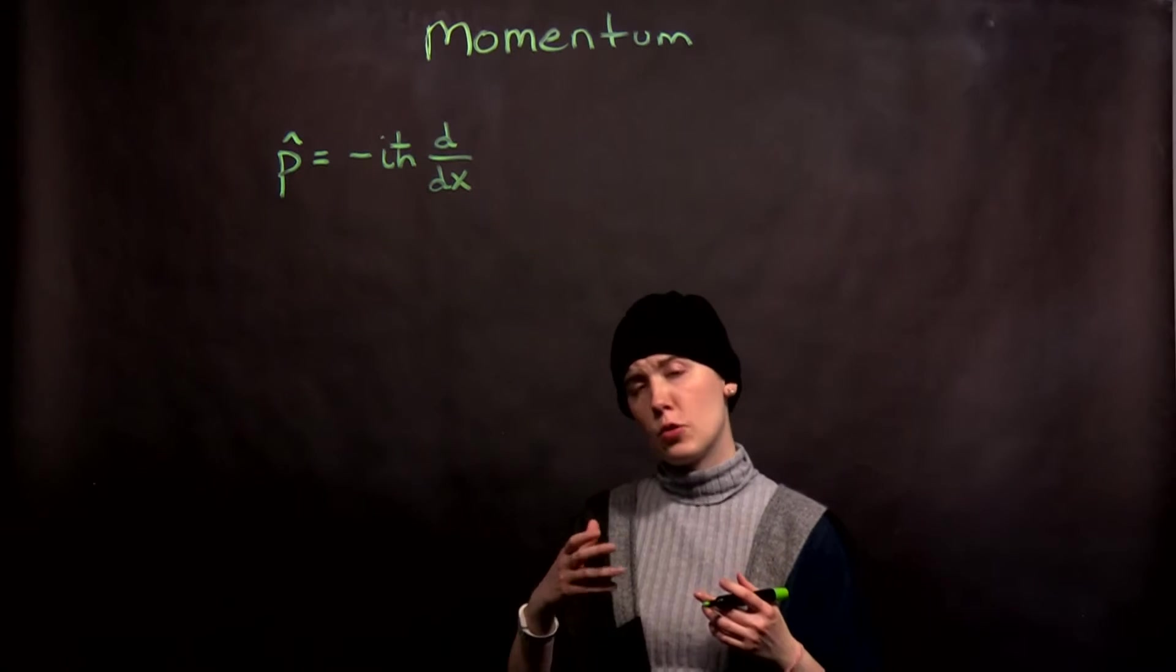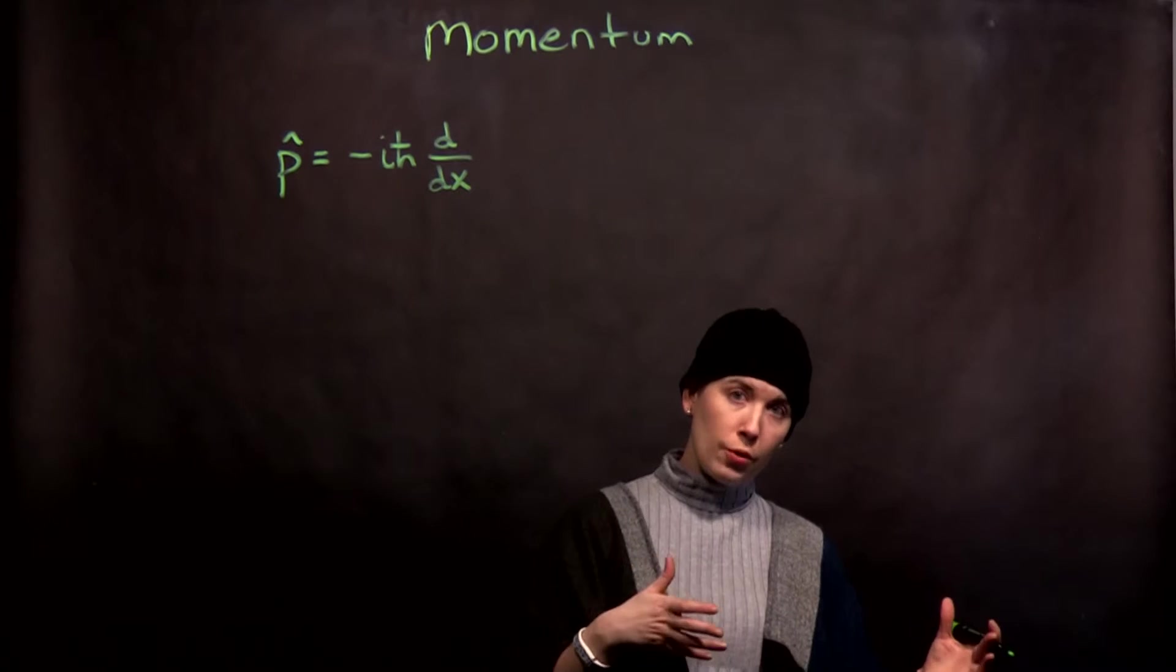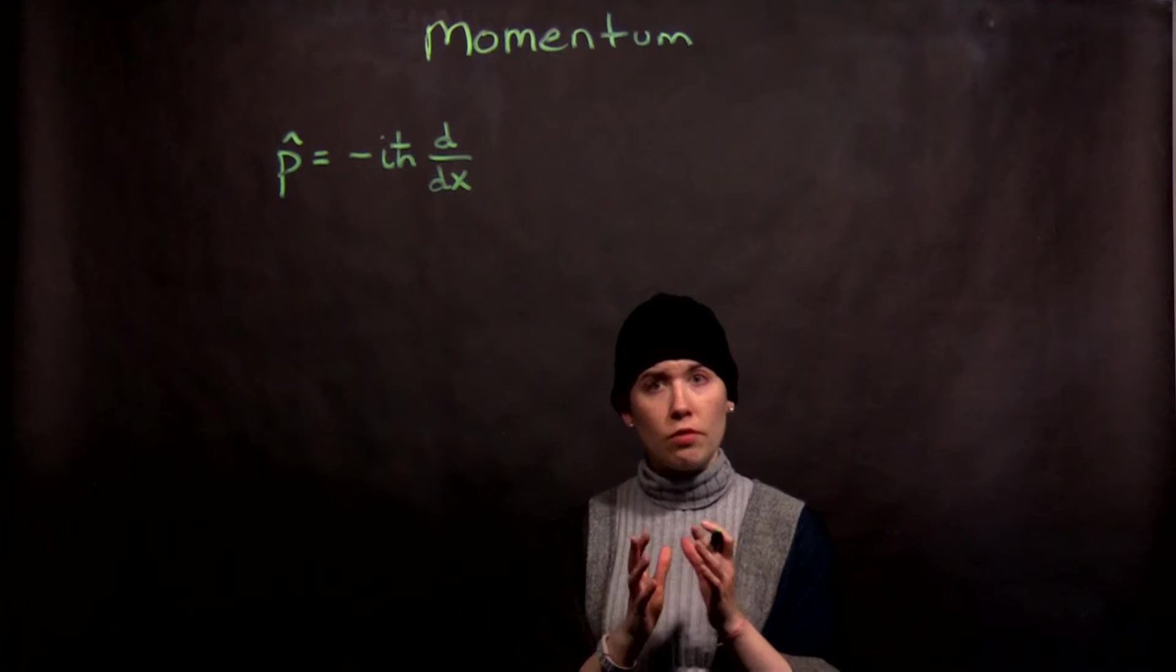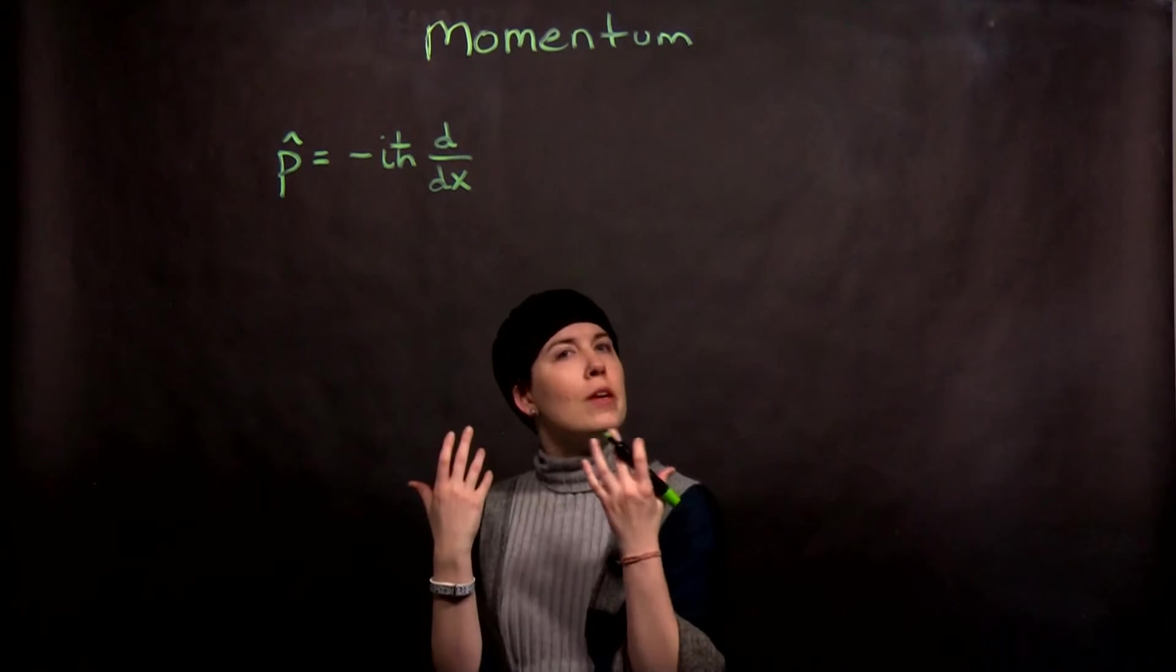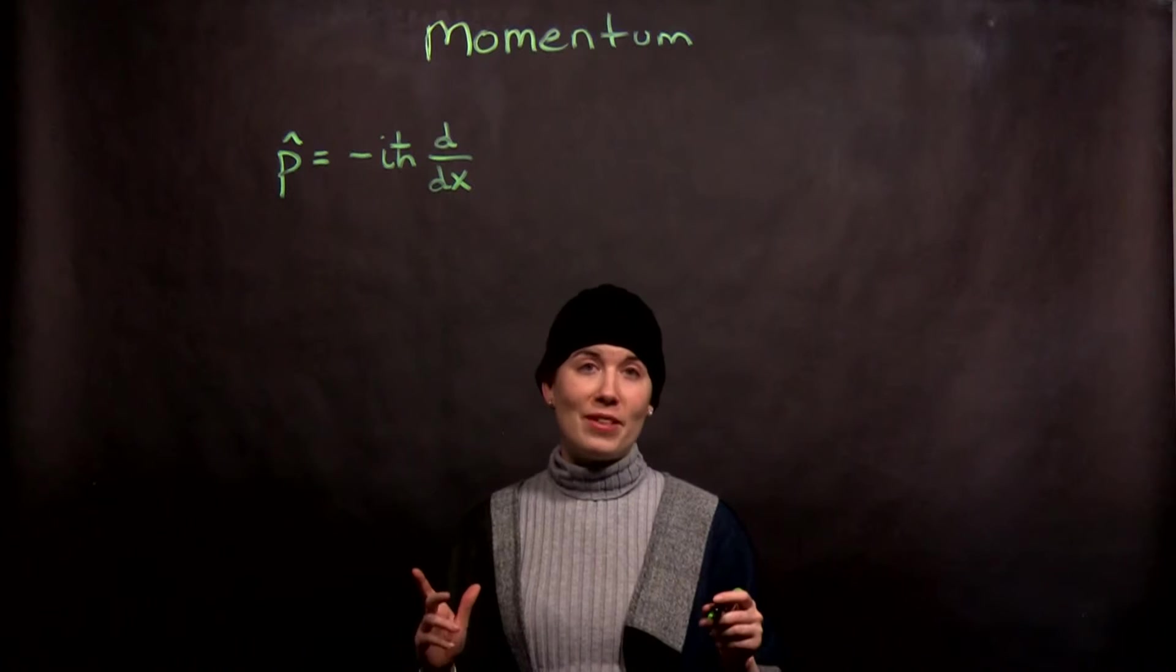One of the first operators we're going to be working with is the momentum operator. So we've met the Hamiltonian, which again we have to have a specific system before we can define it in general or in specific. We've met that our position operator is just the position variable, that one's easy. Now we have the momentum operator.